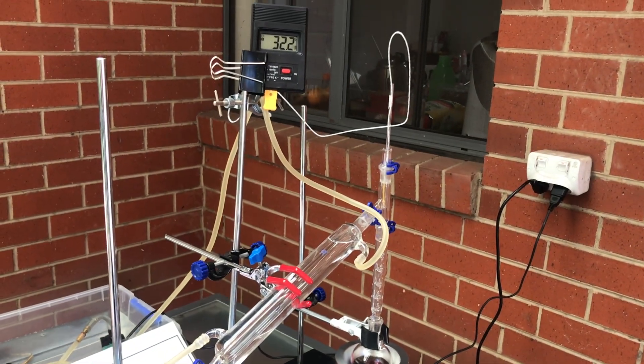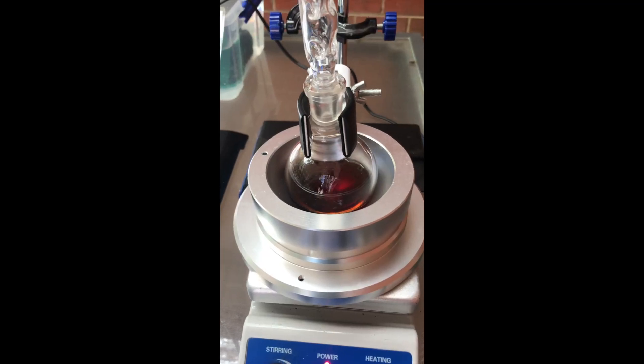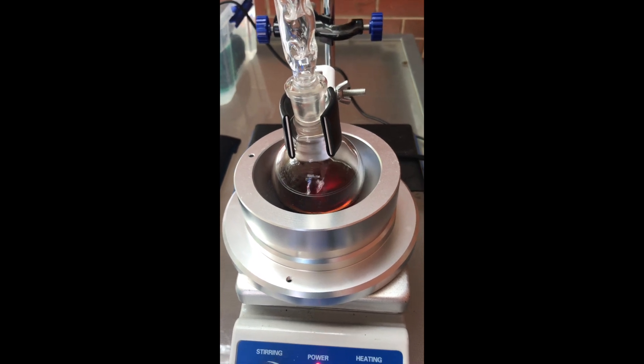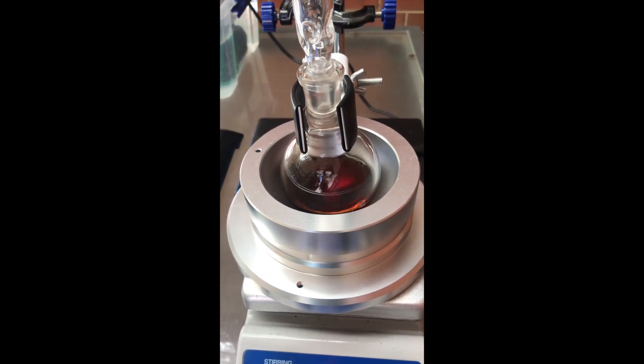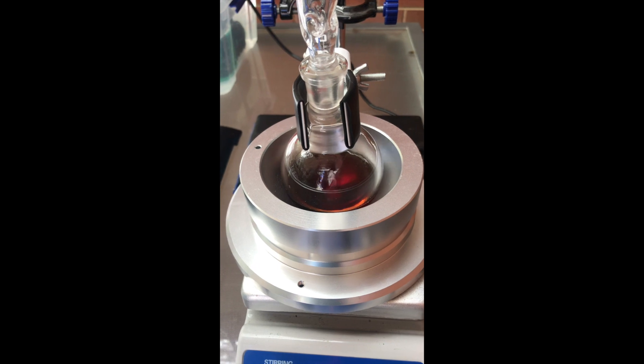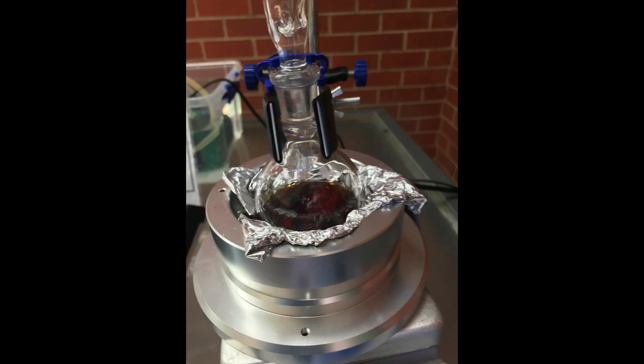It was taking a long time to reach acetone's boiling point of 56 degrees celsius so I covered the bottom of the flask to insulate it with some aluminium foil to make it heat up faster, which actually resulted in protecting the flask from breaking as well.